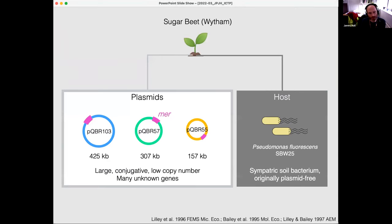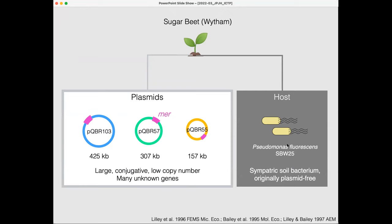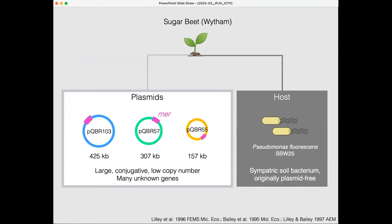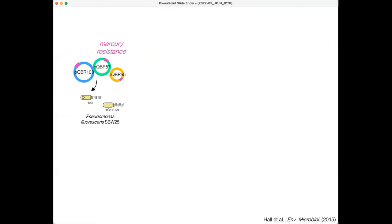The model system I've done this work with is a set of large mercury resistance plasmids which came from the exact same habitat as the bacterium I work with — Pseudomonas fluorescens SBW25. When we take these plasmids and put them in this bacterial host, it's a new pairing not seen in nature, but a realistic one because we know these organisms are sympatric.